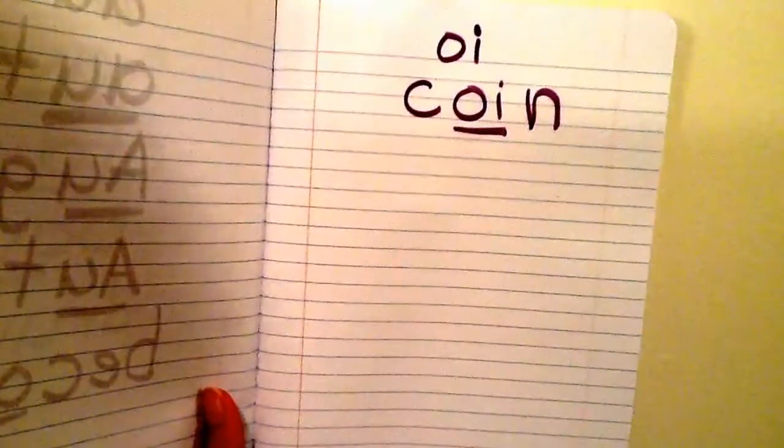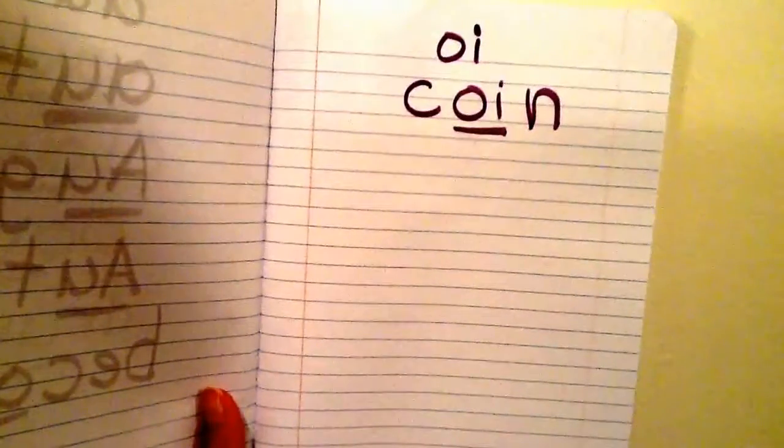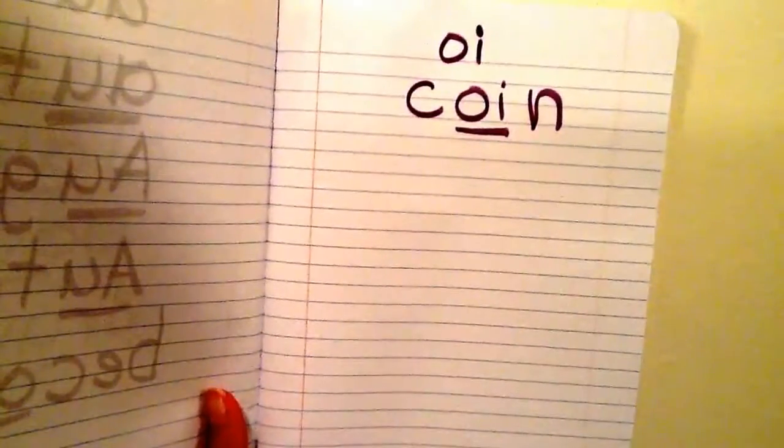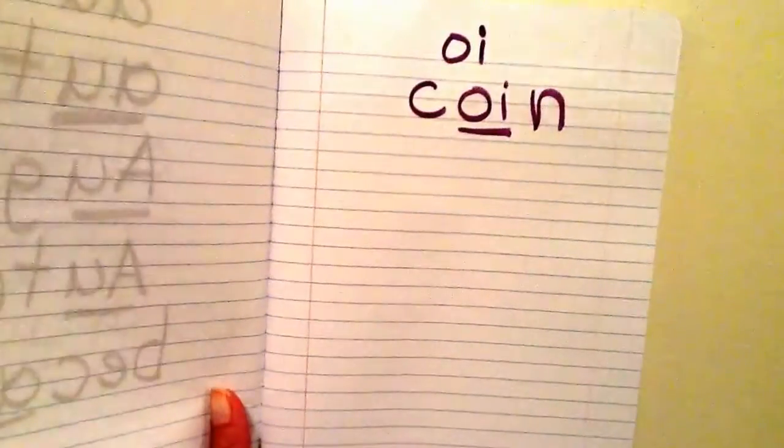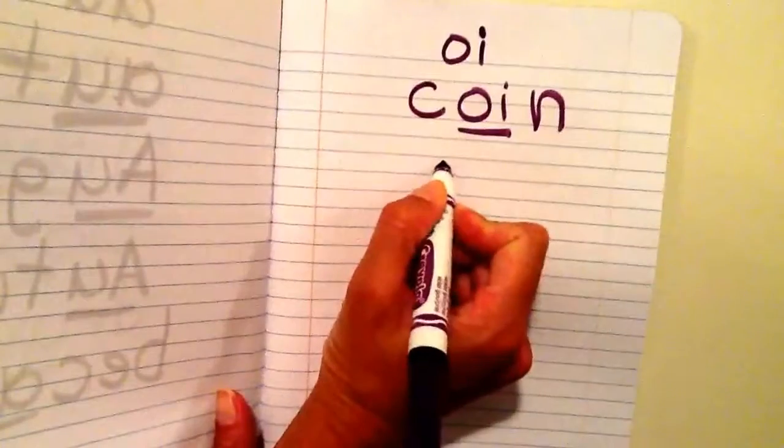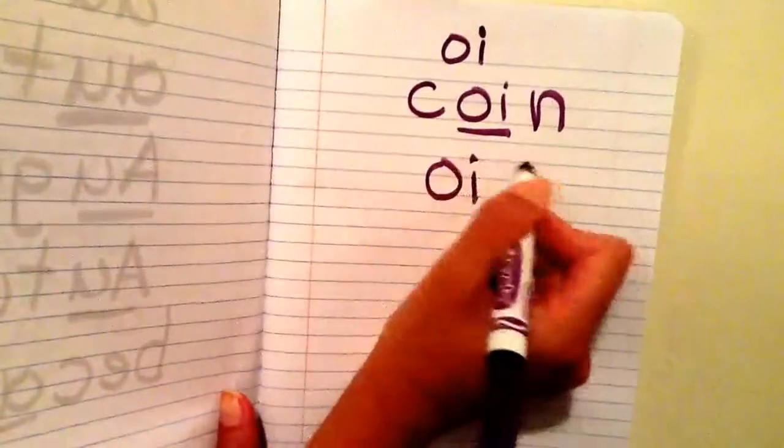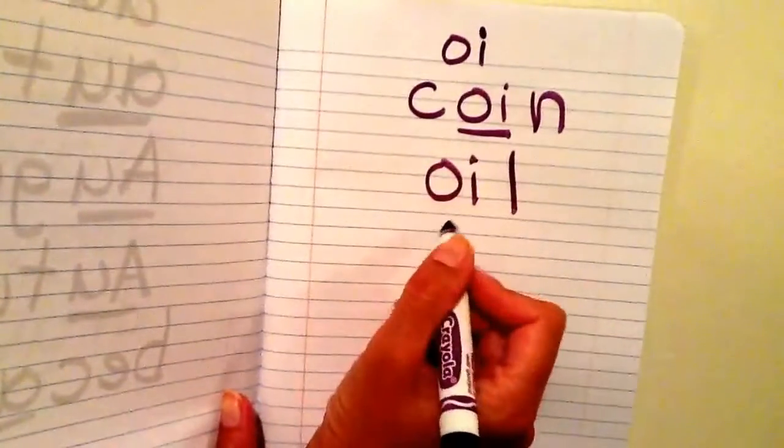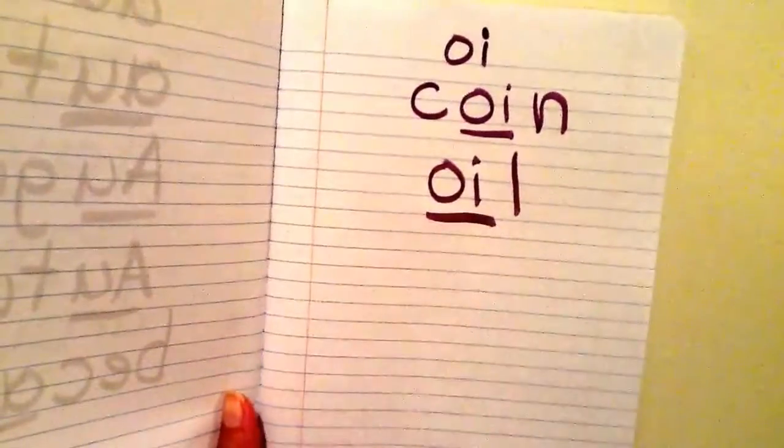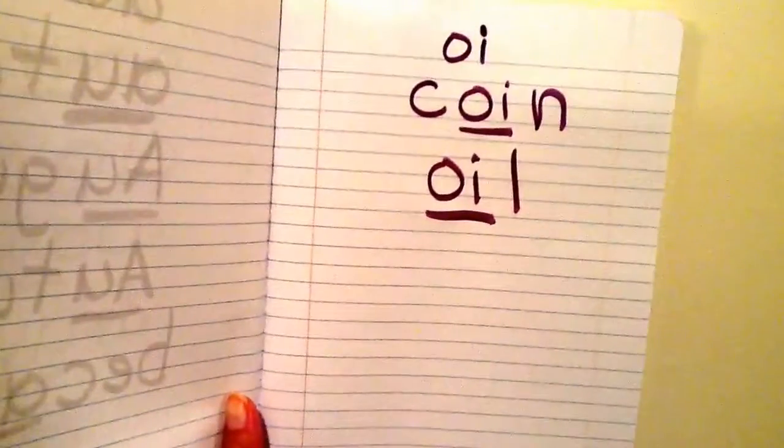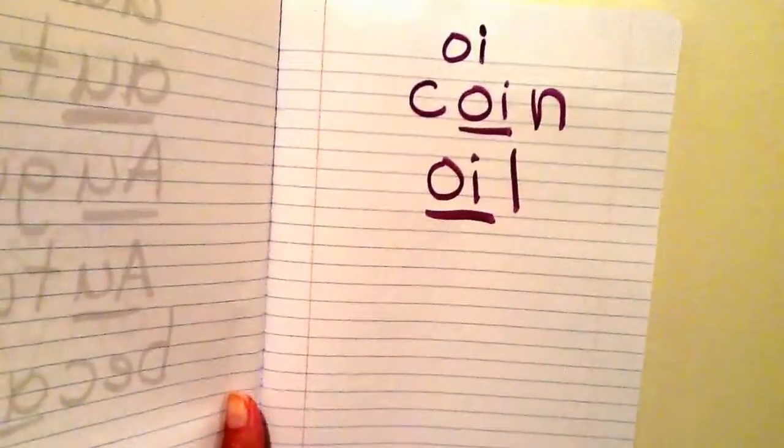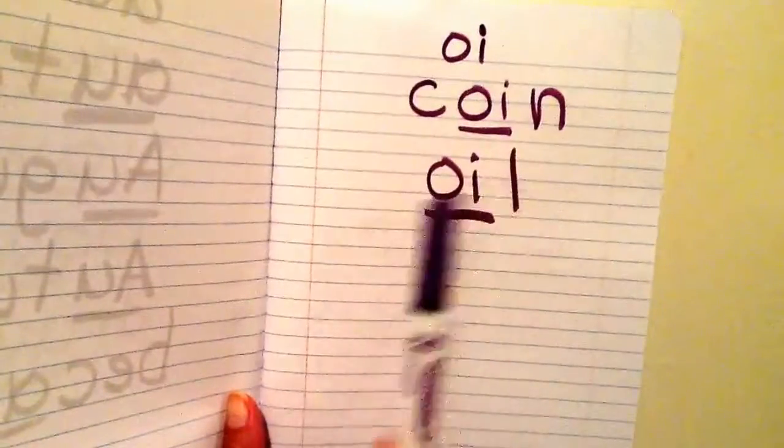Another word that has OI in it as oy is the word oil. Oil. I'm going to write oy as O I and then L. Oil. And then I'm going to underline OI. Please write oil in your word study notebook. O I L. Oil.